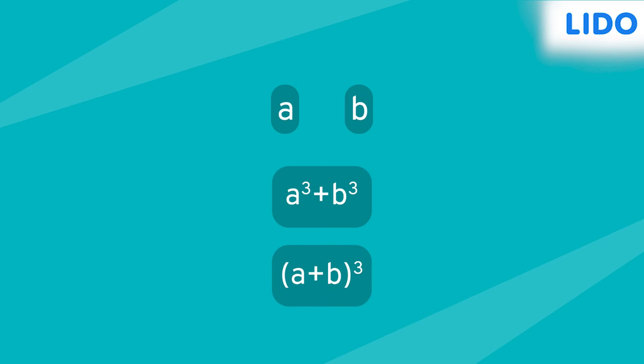The cube of the sum of two numbers, on the other hand, means cubing the addition of two numbers, i.e., (A plus B) the whole cube. To answer this question, let's understand what (A plus B) the whole cube means graphically.